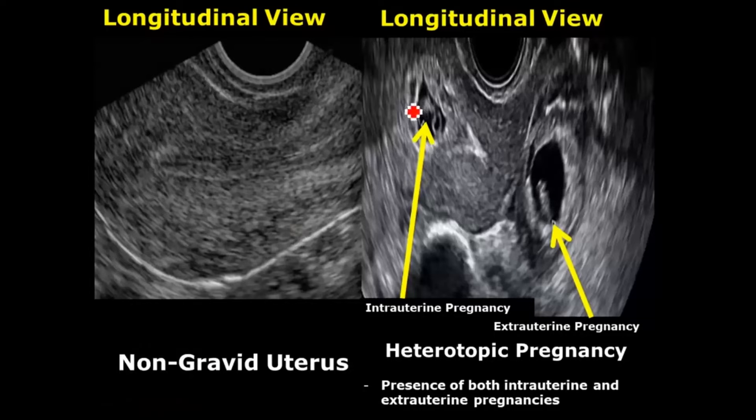Heterotopic pregnancy occurs when there is a presence of both intrauterine and extrauterine pregnancies. This gestational sac is in the normal location inside the uterine cavity, whereas this gestational sac is around the cervical region — an abnormal location.